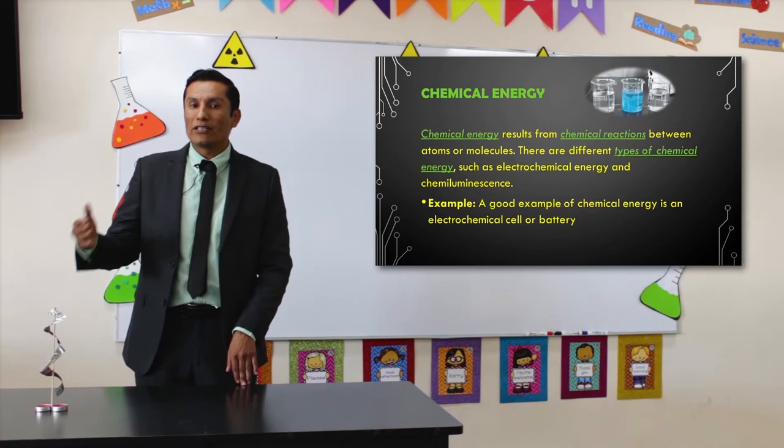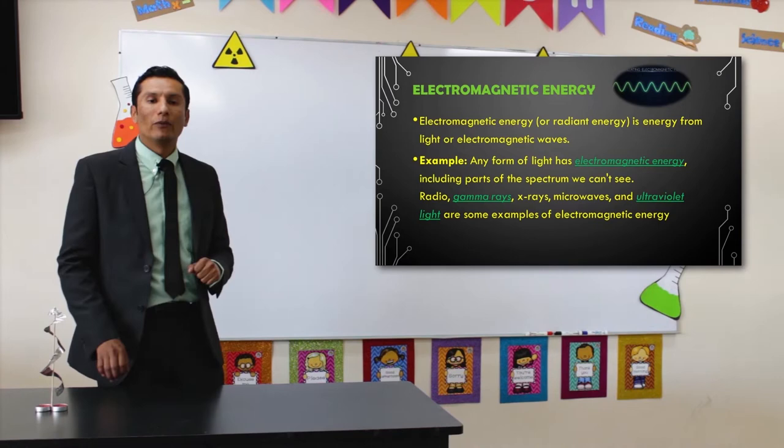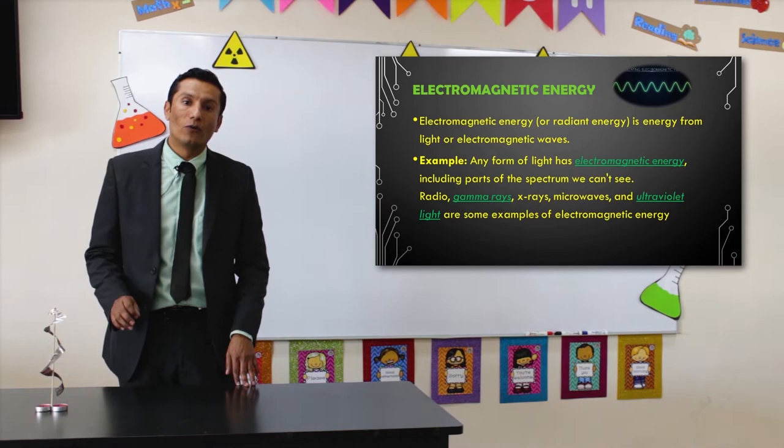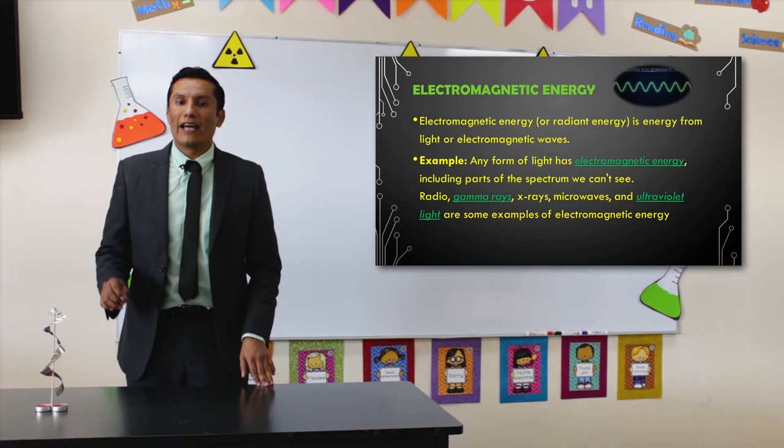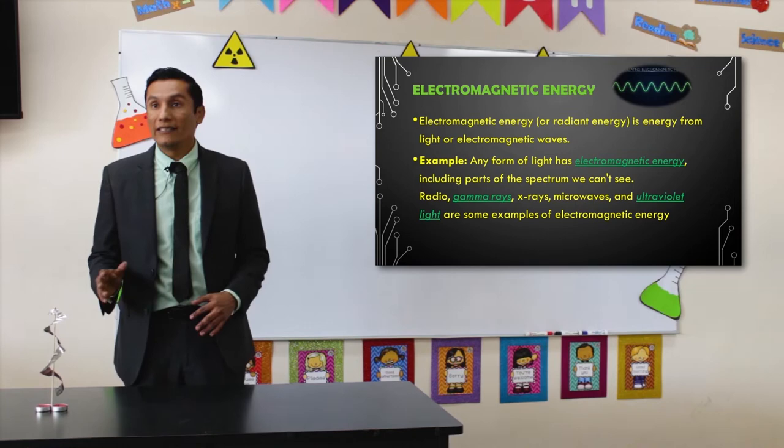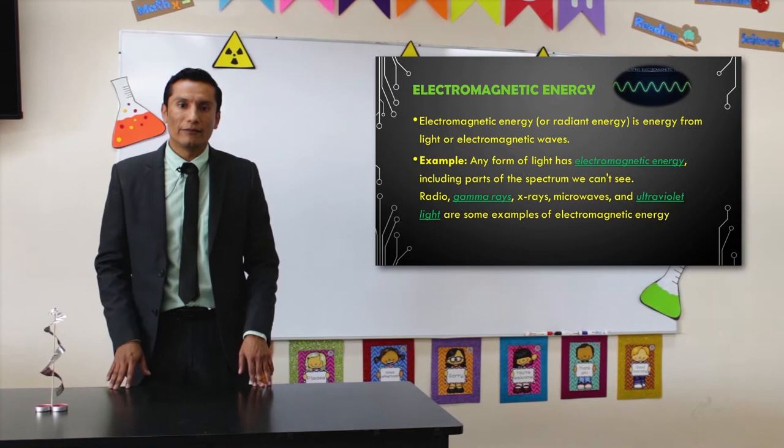The next energy we will see today is electromagnetic energy, also called radiant energy — energy from light or electromagnetic waves. Examples of electromagnetic energy include any form of light, as well as parts of the spectrum we can't see: radio waves, gamma rays, X-rays, microwaves, and ultraviolet light.